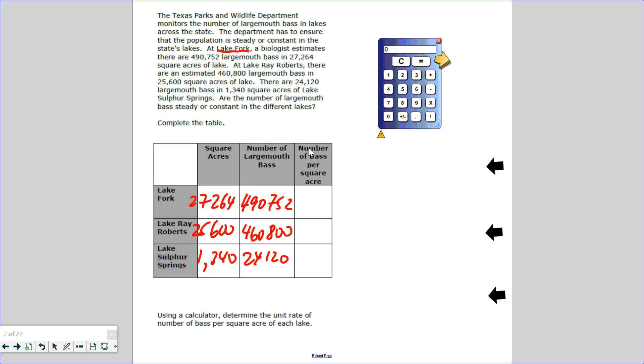At Lake Ray Roberts, there are 460,800 bass in 25,600 square acres. And in Lake Sulphur Springs, there are 24,120 bass in 1,340 square acres. That's a smaller lake, as you can tell. So using a calculator, determine the unit rate of the number of bass per square acre.